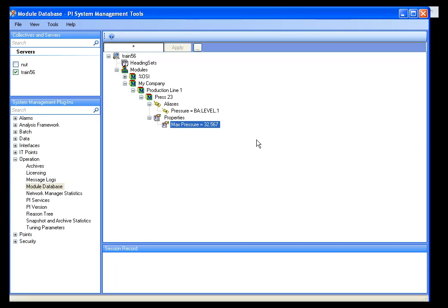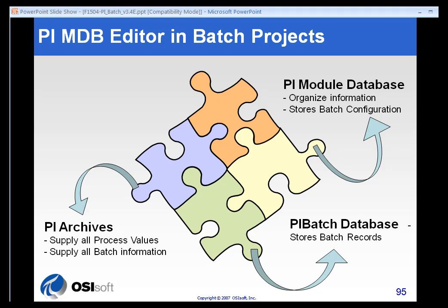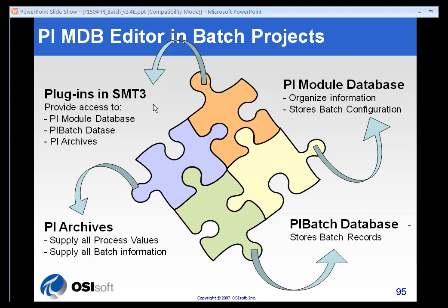So the module database editor is generally what we will use to create modules, aliases, and properties. With this last piece of information, we can fill in the label on the final point of our jigsaw puzzle. We started with the PI archives, which store the process values and batch information. The PI batch database stores all of the batch records — it is what we query to find batches that ran during a certain start and end time or against a certain product or recipe. The module database organizes our process and stores all of the batch configuration information. Finally, our plugins to SMT — the module database editor, a batch database plugin, and a PI archive plugin — all fit together and form the batch system within PI.